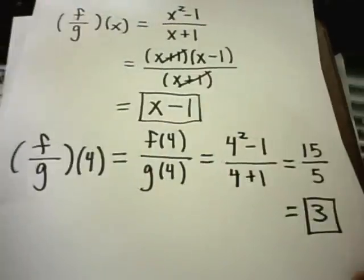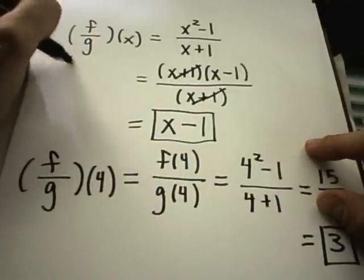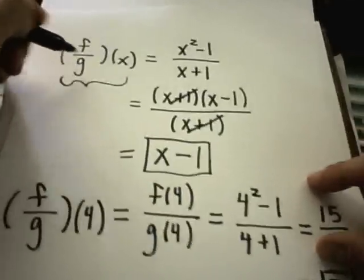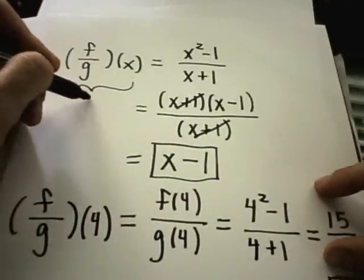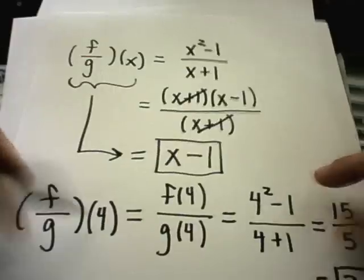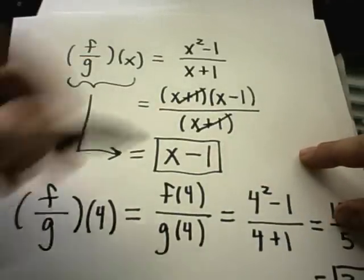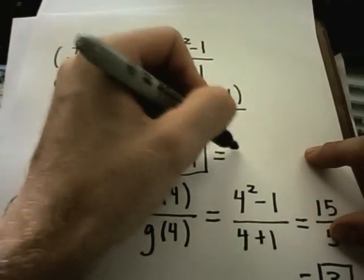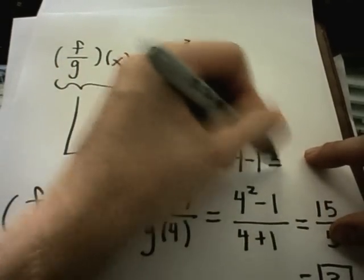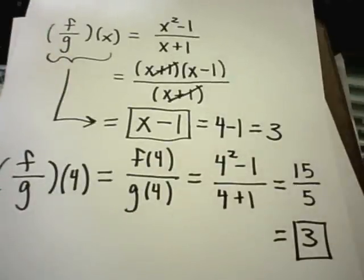And notice that's the same thing I would have gotten in my original formula. You could just find f divided by g of x more generically. And then at the end, if you want to find f divided by g of 4, you could have simply plugged in 4 here and got 4 minus 1, or again, you would have gotten 3 out as your answer. So two equivalent ways of doing these problems.